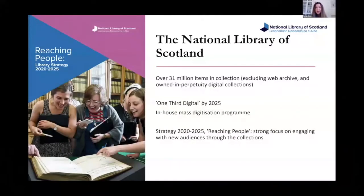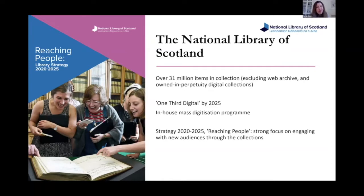A quick overview of the National Library of Scotland: we're a pretty big library with over 31 million items in the collection, and that doesn't include a lot of our digital collections like the web archive. We've been working for the last seven or eight years toward a one-third digital strategic aim by 2025 — our centenary year — to have a third of our collections available in digital format. Part of that has been a big in-house mass digitisation program, creating a lot of opportunities for digital scholarship. Our 2020–2025 strategy, 'Reaching People,' has a new focus on engaging new audiences through the collections, taking them out to communities beyond the research community.